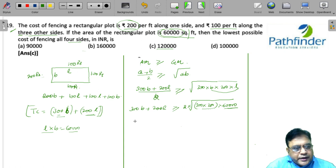What does that mean? 300 times B plus 200 times L must be greater than equal to 2 into 60,000. So, 300B plus 200L is greater than equal to 1,20,000.